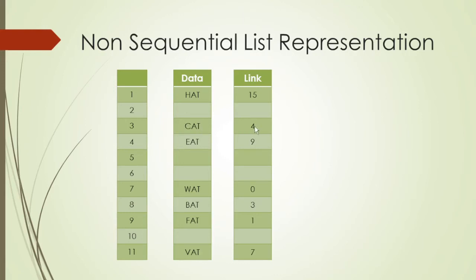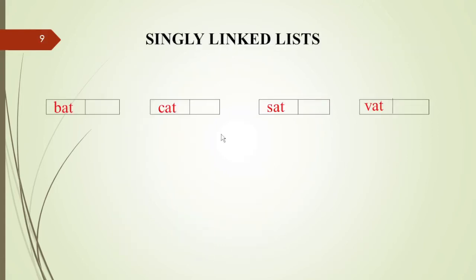We represent 'cat' at location 4, which is 'eat'. You have a data array and a link array where the next element's array locations are stored. In the empty locations you can put any element; insertion and deletion will also be easy. We have 4 elements in the linked list.